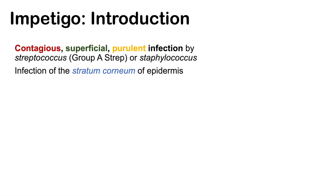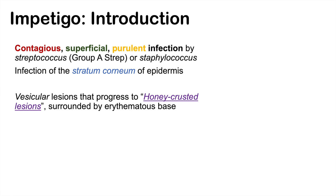It's an infection of the stratum corneum, and this condition presents in a particular way. It starts with vesicular lesions that progress to a honey-crusted lesion — that's the key here. It's a honey-crusted lesion which is surrounded by an erythematous, or red, base.